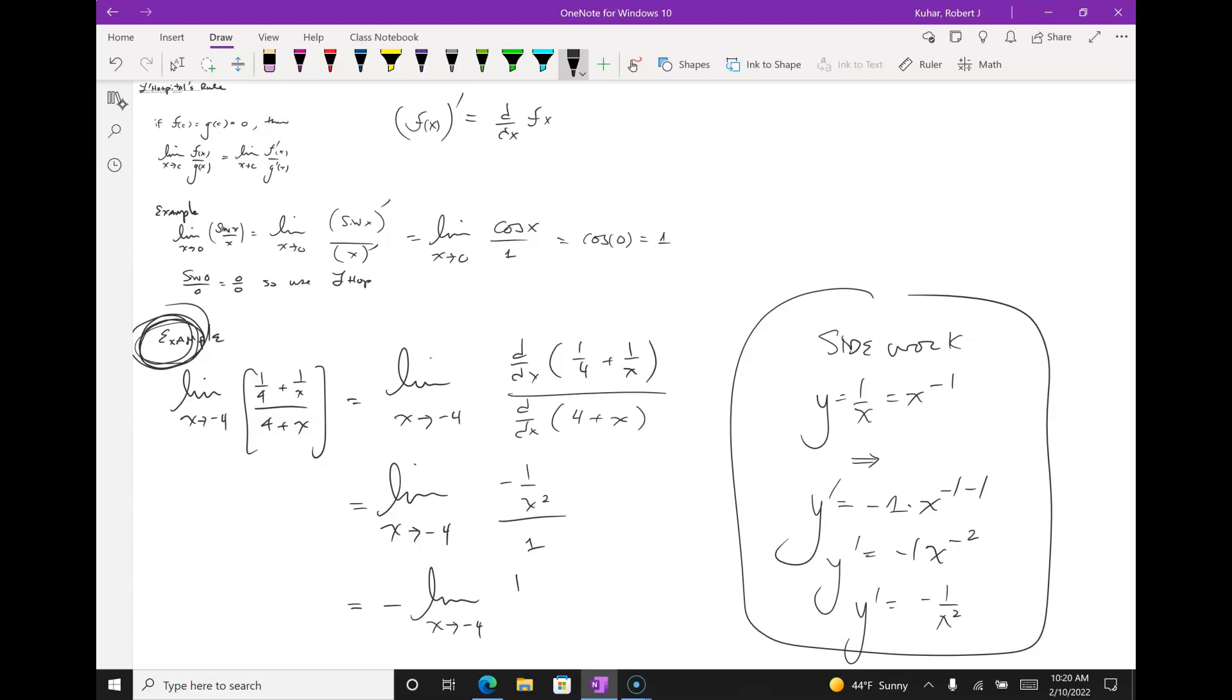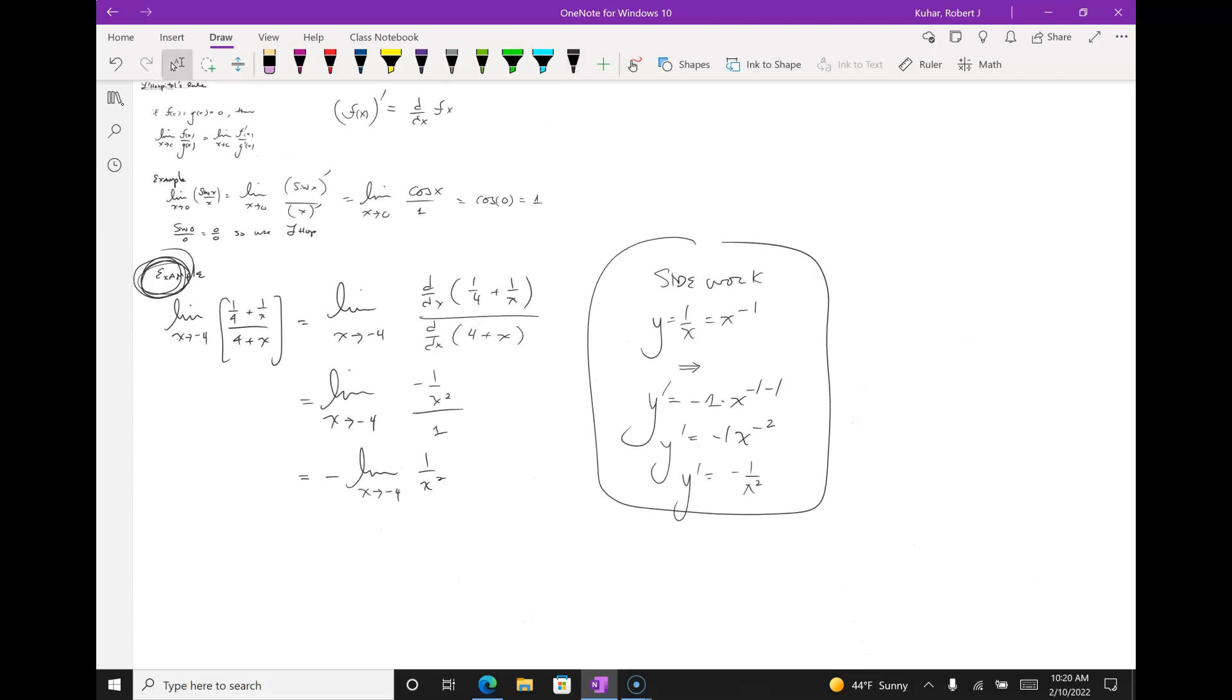I'd rather you simplify it, but I don't care if you do. Notice I took the negative out. Constants can come in or out of a limit. One over x squared divided by one is one over x squared. So, there's my new limit. And I'm ready to put negative four in.